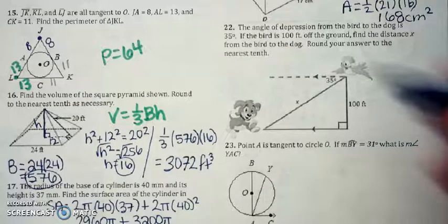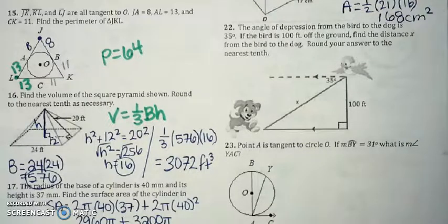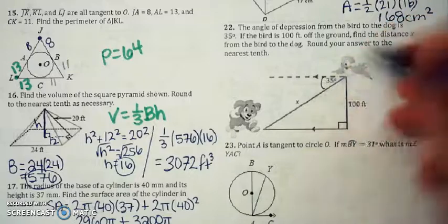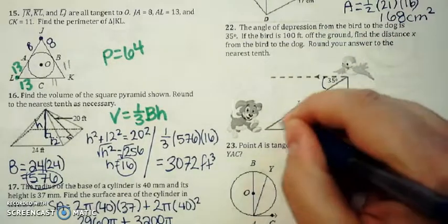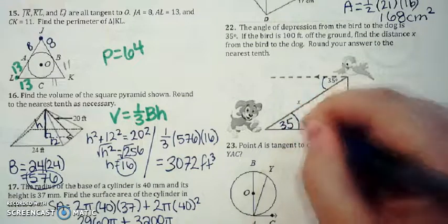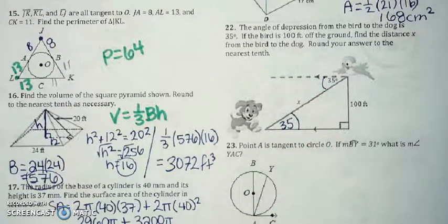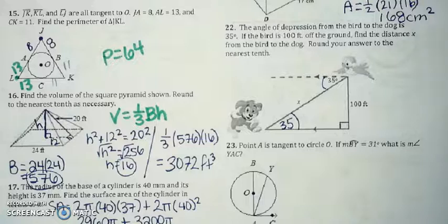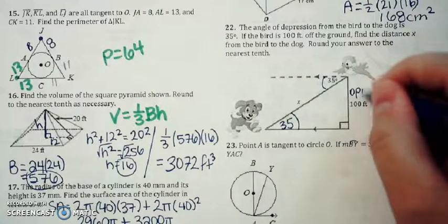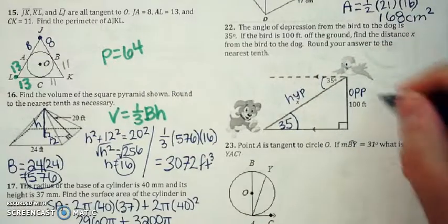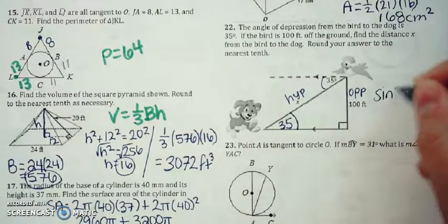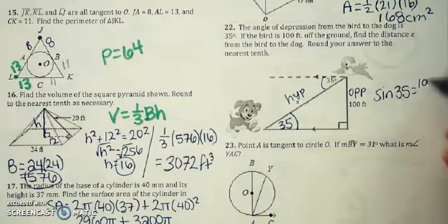Alright, for number 22, the angle of depression here is 35 degrees. Remember the two horizontal lines here are parallel, so by alternate interior angles, this angle within the triangle is also 35 degrees because alternate interior angles are congruent. What we have is an opposite and the hypotenuse, so to find x here,